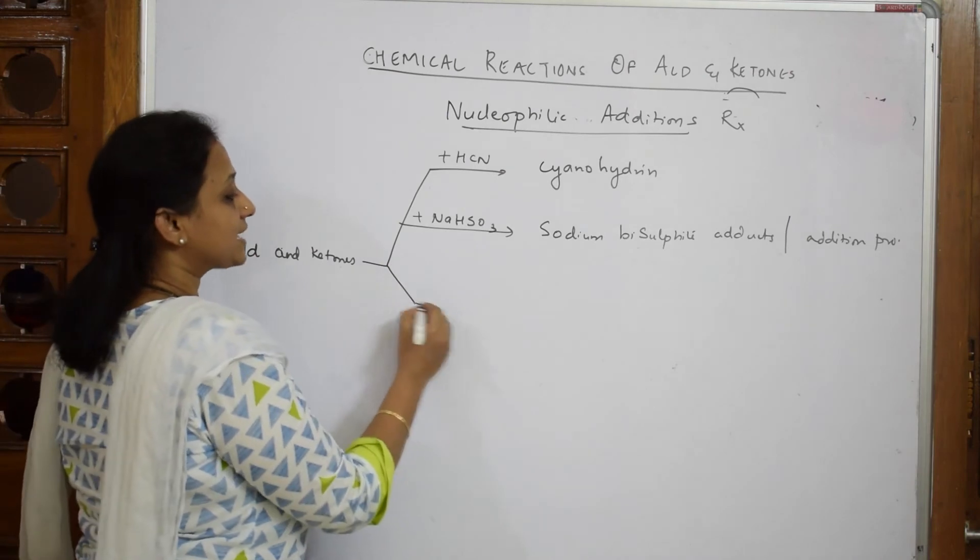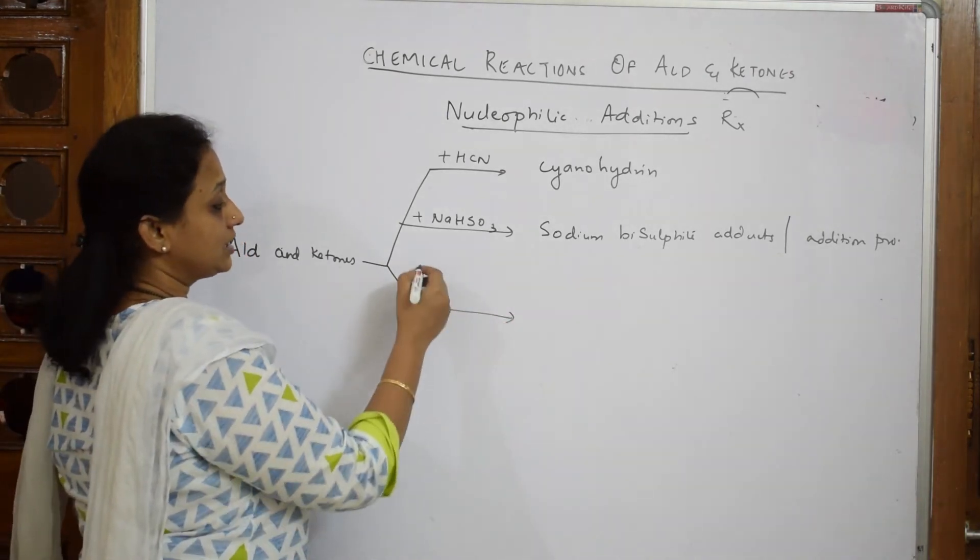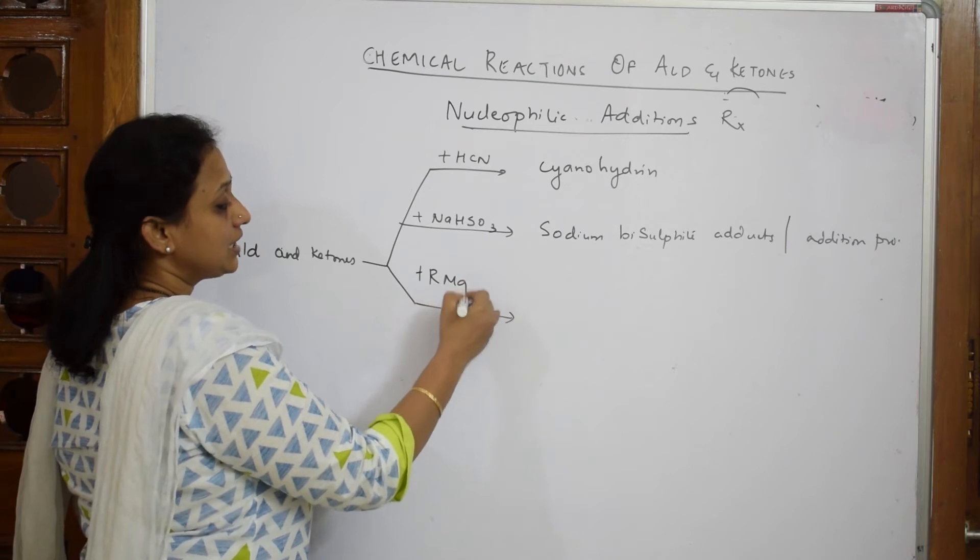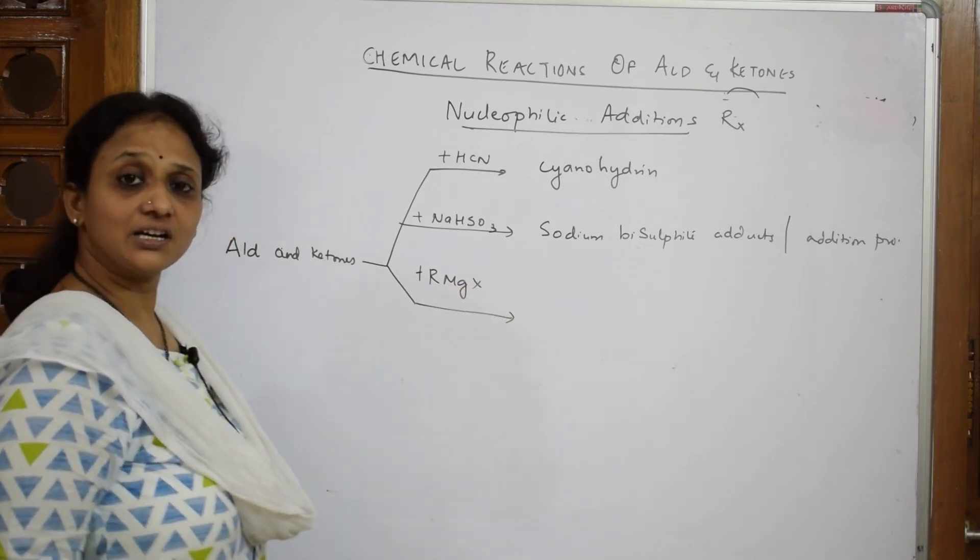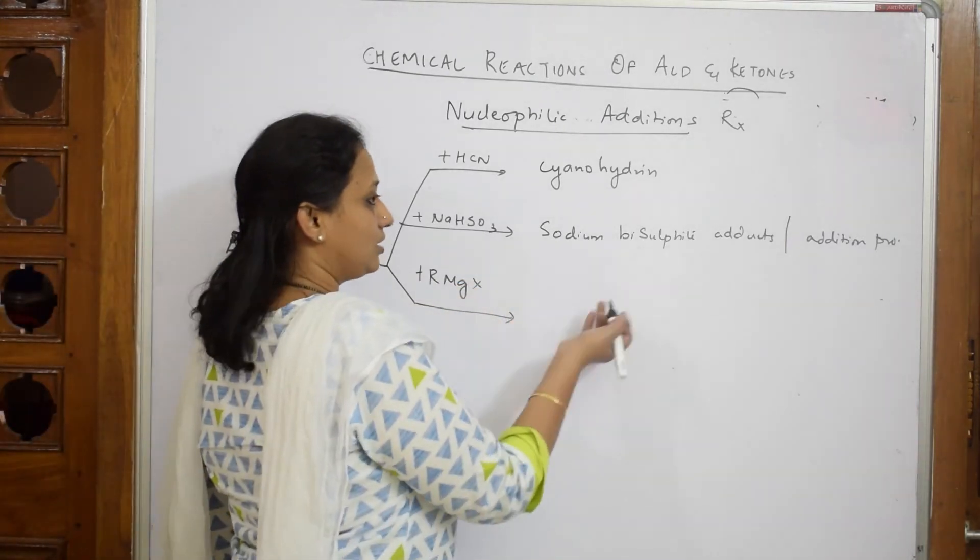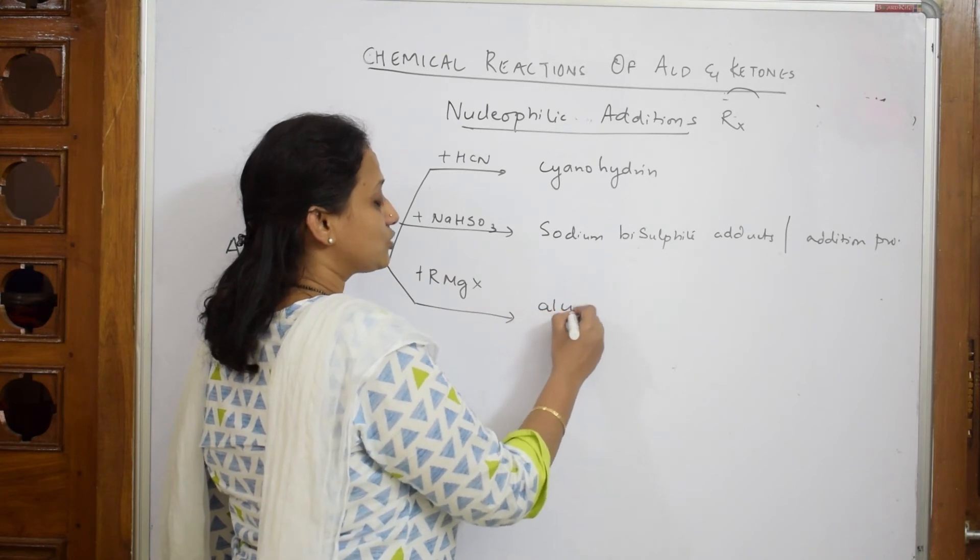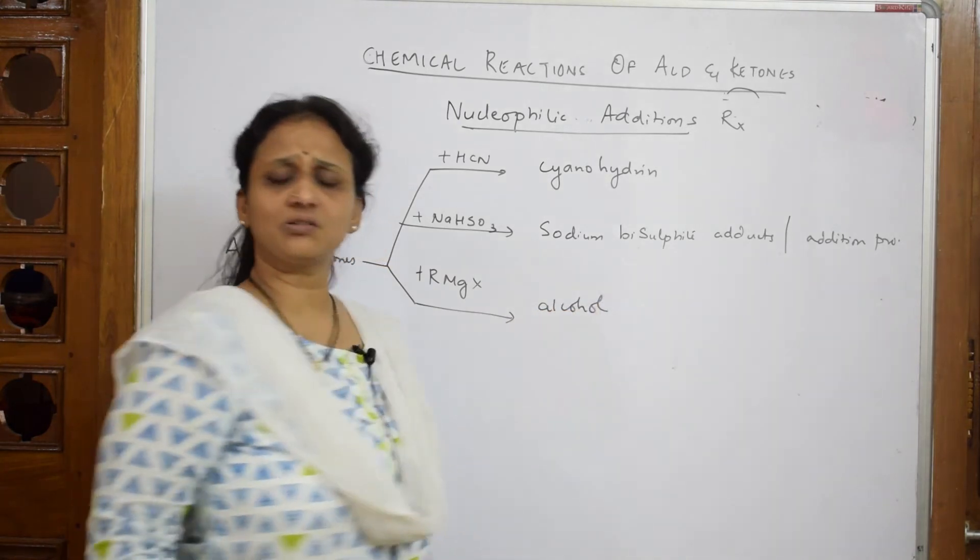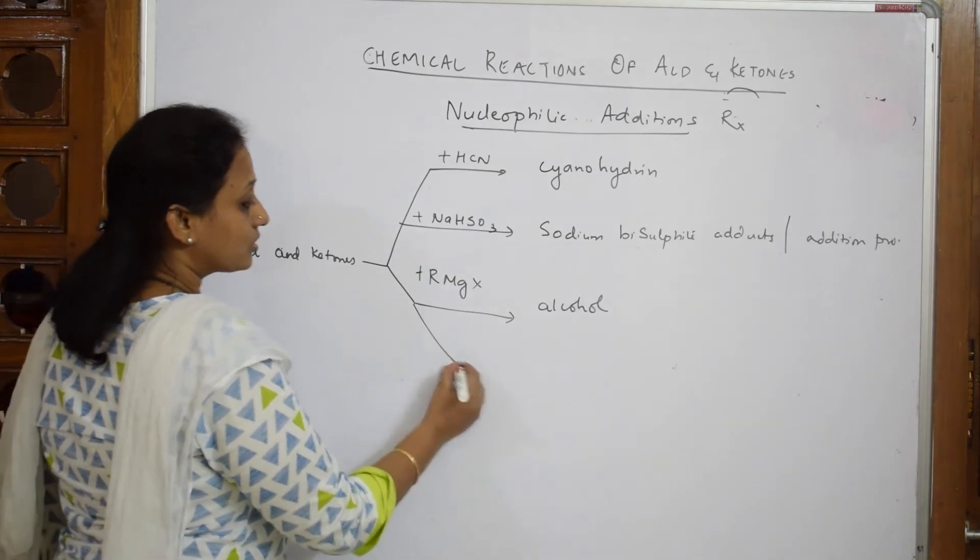Aldehydes and ketones will react with Grignard reagent (RMgX) and form alcohols - I'll show you which will form primary, secondary, and tertiary alcohols.